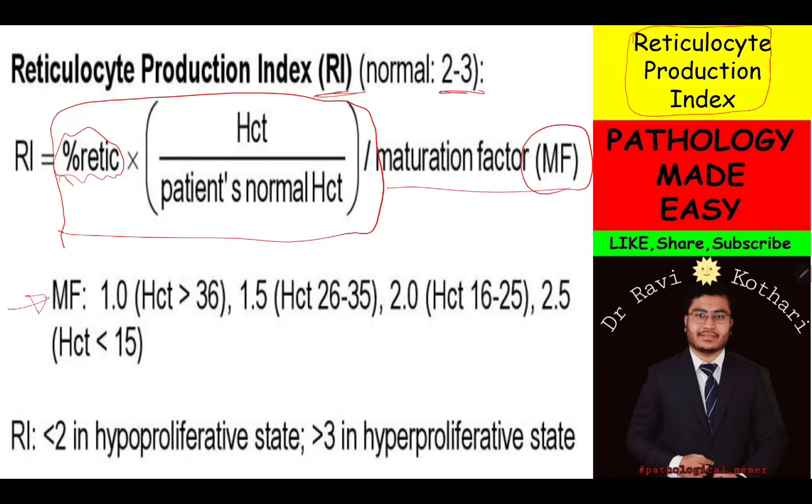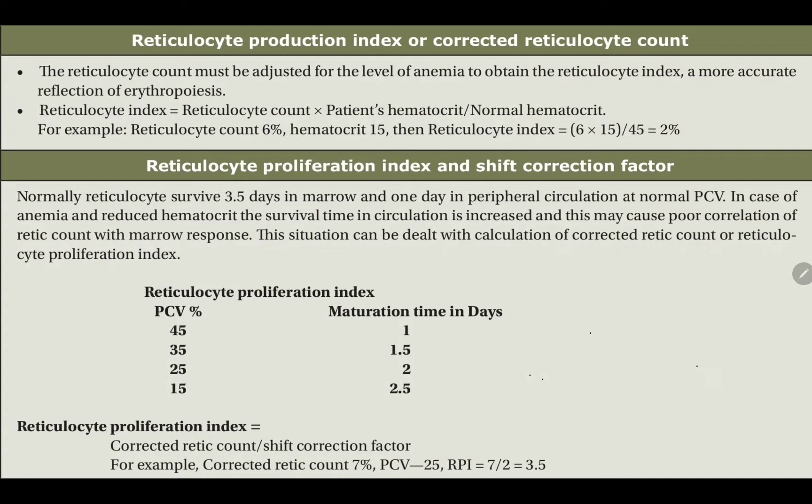And here the formula for how to count the maturation factor. If the RI comes to less than 2, it's called hypoproliferative state. And if it's more than 3, then it's hyperproliferative state.